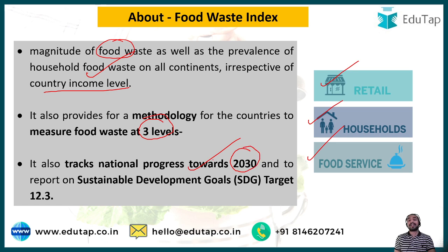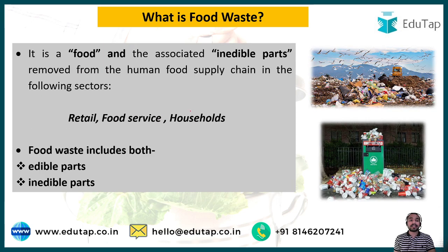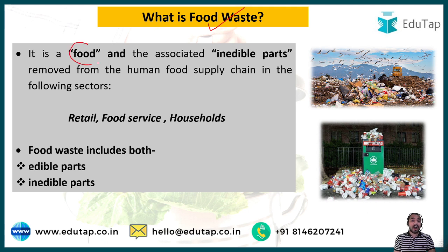The index tracks progress towards the 2030 target and reports on Sustainable Development Goal target number 12.3. According to this index, food is defined as any substance intended for human consumption. Food waste is defined as food and the associated inedible parts which are removed from the human food supply chain in the retail, food service, and household sectors.